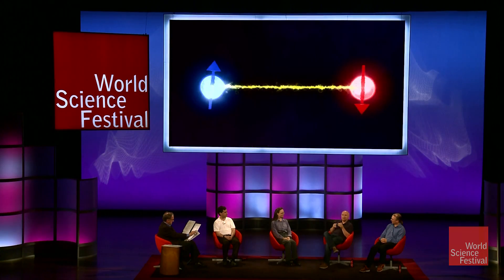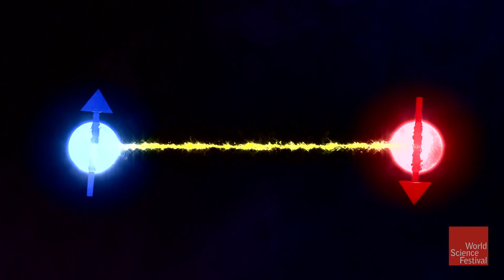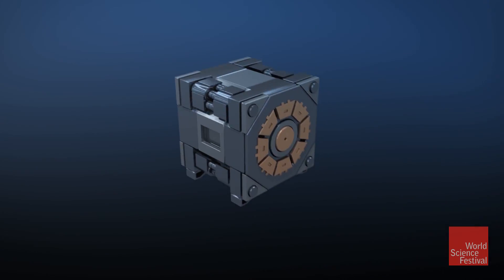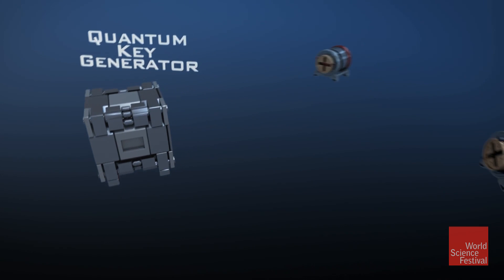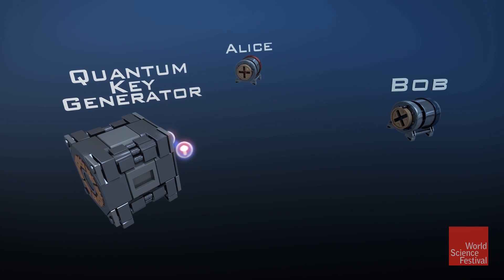How would quantum codes be able to be unbreakable, and does it involve entanglement somehow? What we can do — we are talking about quantum entanglement. Two particles, for example, two photons can be placed in different locations. One can go to, say, Alice, another one can go to Bob.